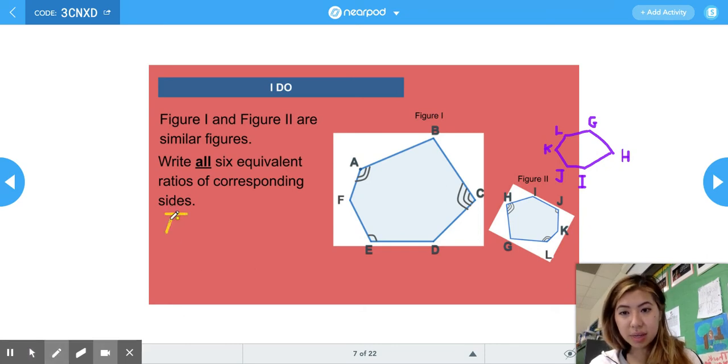I have side AB corresponds to side LG. And then I'm just going to go clockwise. Side BC corresponds to GH. And then side CD corresponds to HI.